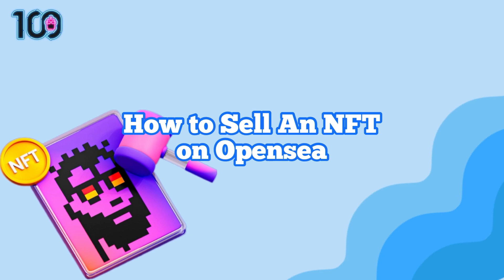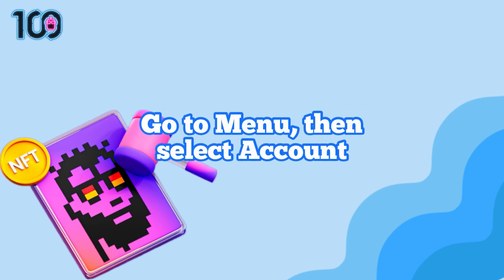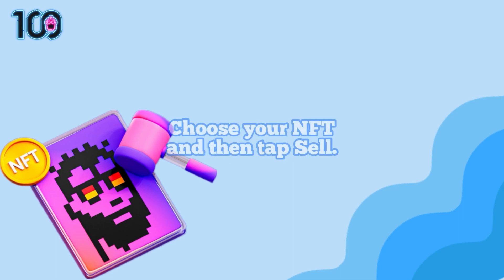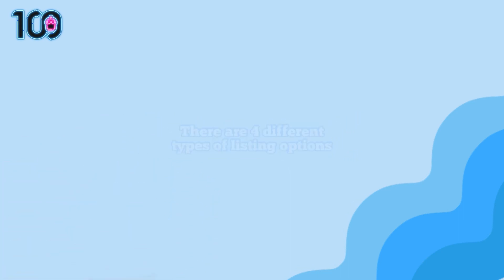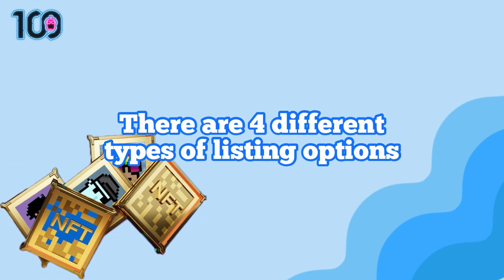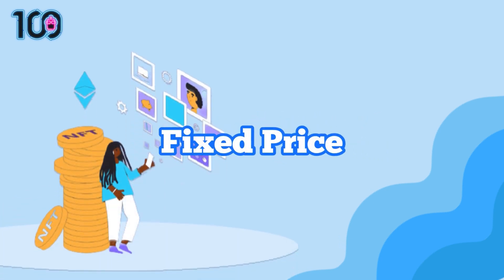How to sell an NFT on OpenSea: go to menu, then select account, choose your NFT, and then tap sell. There are four different types of listing options. Fixed price: the fixed price listing option will put your NFT on sale for a buy now price.